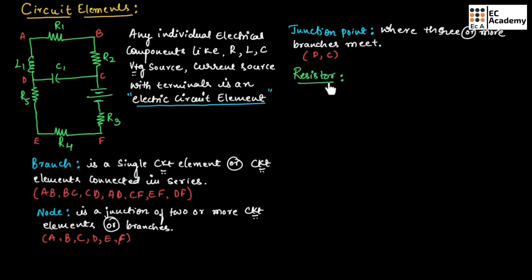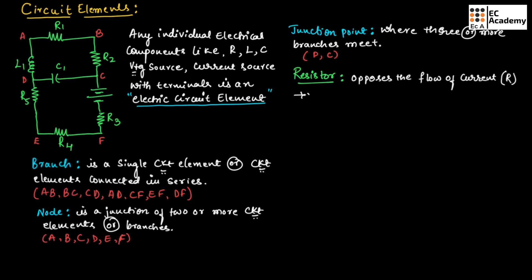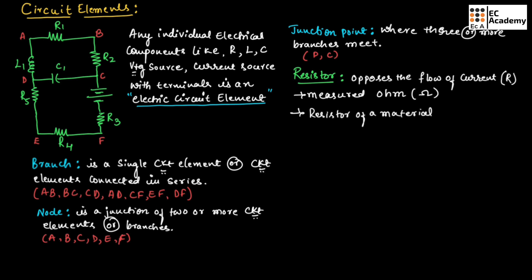Now let us understand what a resistor is. A resistor opposes the flow of current through it. Wherever we connect a resistor in a circuit, it will oppose the flow of current. We denote resistor as capital R and it is measured in terms of Ohm. The resistor of a given material can be expressed as R equals rho L by A.